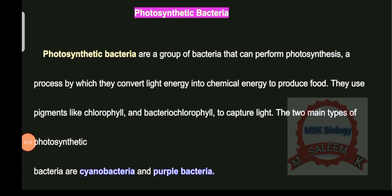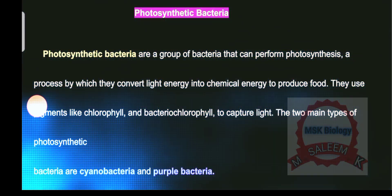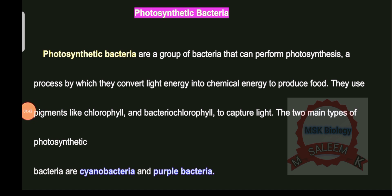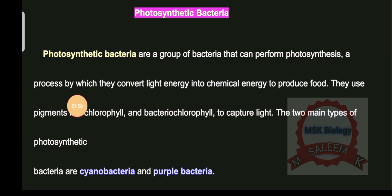Let's study each type one by one. First, photosynthetic bacteria — a group of bacteria that can perform photosynthesis, a process by which they convert light energy into chemical energy to produce food. They use a pigment called Bacteriochlorophyll.